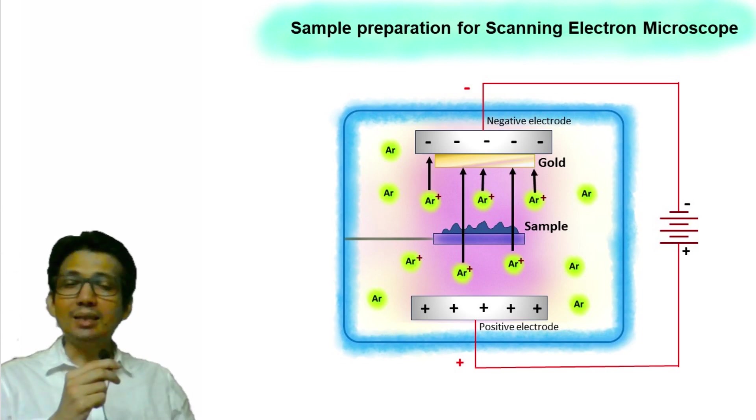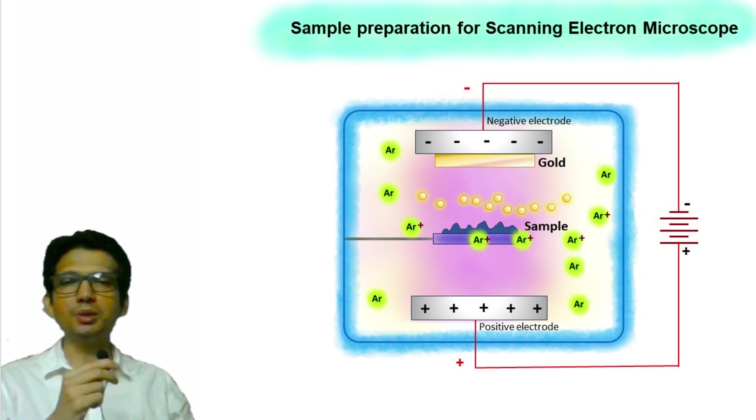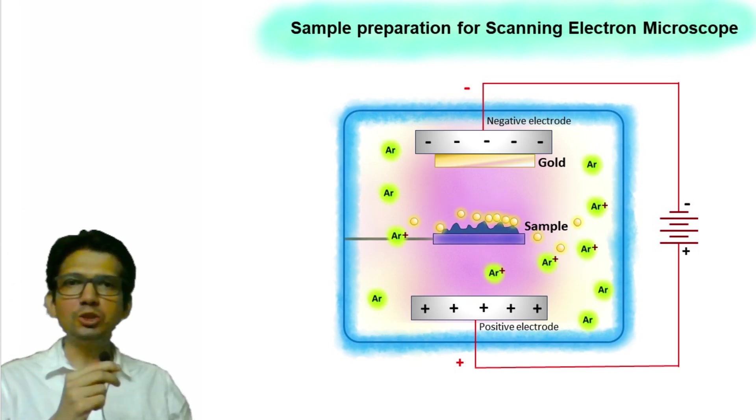When the accelerated argon ions traveling at high velocity collide with the gold surface, it causes gold atoms to be released from the surface. These gold atoms are then gradually deposited on the sample.